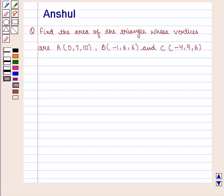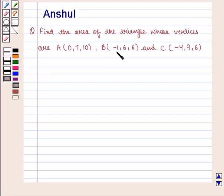Hello and welcome to the session. In this session, we are going to discuss the following question: Find the area of the triangle whose vertices are A with the coordinates (0, 7, 10), B with the coordinates (-1, 6, 6), and C with the coordinates (-4, 9, 6).